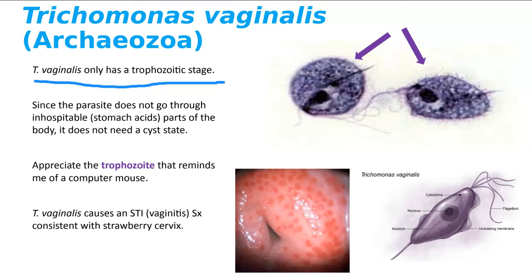The trophozoite looks like a mouse click — an oval-shaped structure. It has a pointy edge called an axostyle, which is how it attaches to the tissues of the body it's infecting. It causes a sexually transmitted infection called trichomoniasis, more commonly called vaginitis. It can also cause balanitis, which is infection of the penis. The symptomology includes strawberry cervix, where all the little lesions are where the axostyle has attached to the cervix.